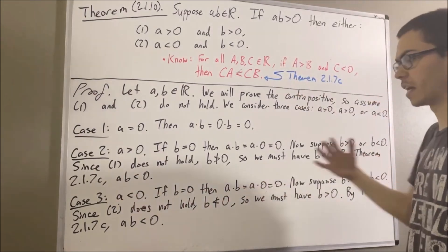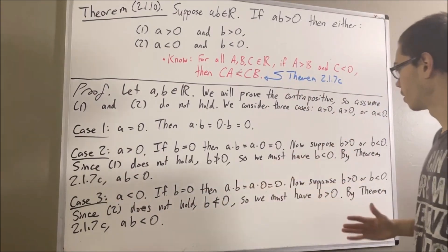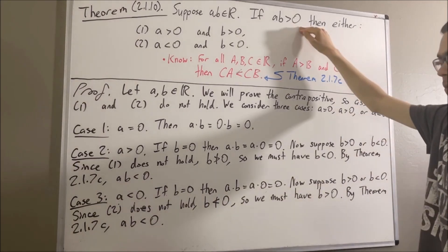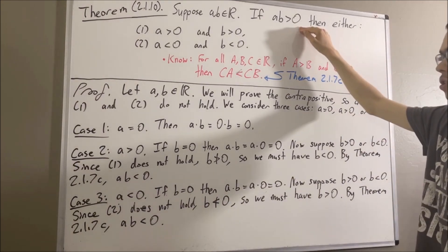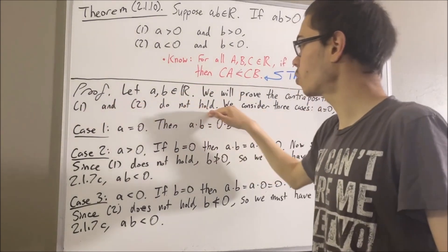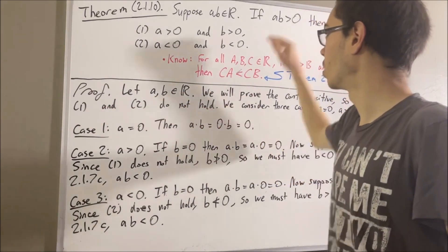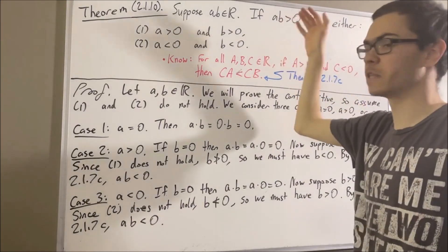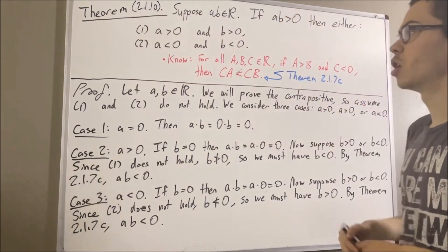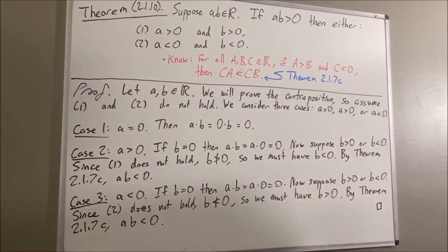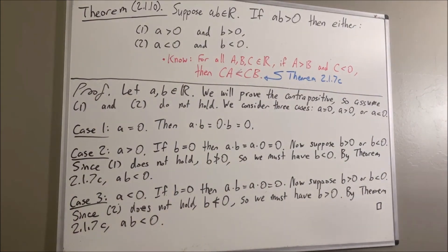So we have proven in all three cases that AB is not greater than zero. What that means is, under the assumption that conditions one and two do not hold, AB greater than zero does not hold. So we have proven the contrapositive of the theorem, which means we have proven the theorem. This completes the proof. And that's pretty much it for this video.